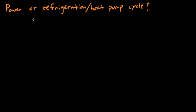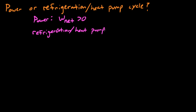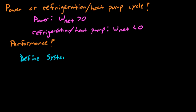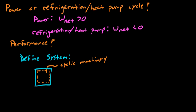What we'd like to find out is whether or not this is a power or refrigeration heat pump cycle. Remember that for a power cycle, the net work is going to be positive — we're going to get work out of this device. By comparison, a refrigeration or heat pump cycle is going to have a negative net work; in other words, we had to put work in. We're also going to try and find out what the performance of our device is. To start solving this, we always need to start by defining our system, so we add some system with a boundary. Inside our system is this cyclic machinery, some sort of a piston-cylinder device. We want to label our interactions — we have heat going in and work going out; these are the assumed directions.